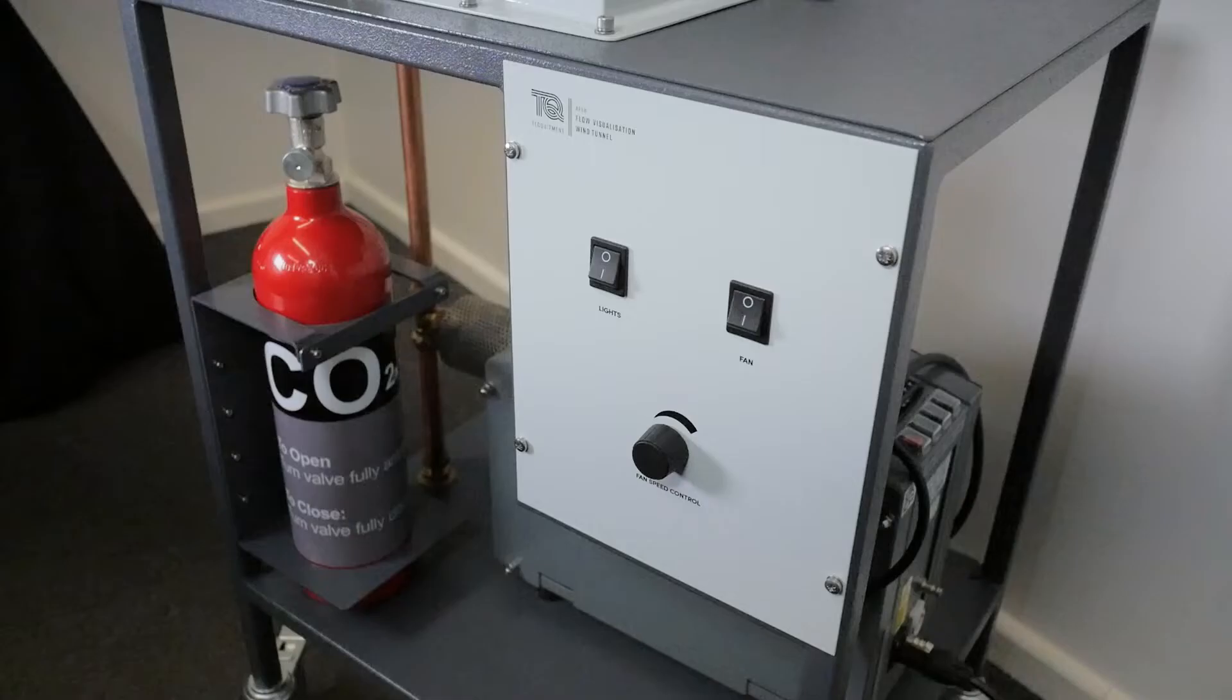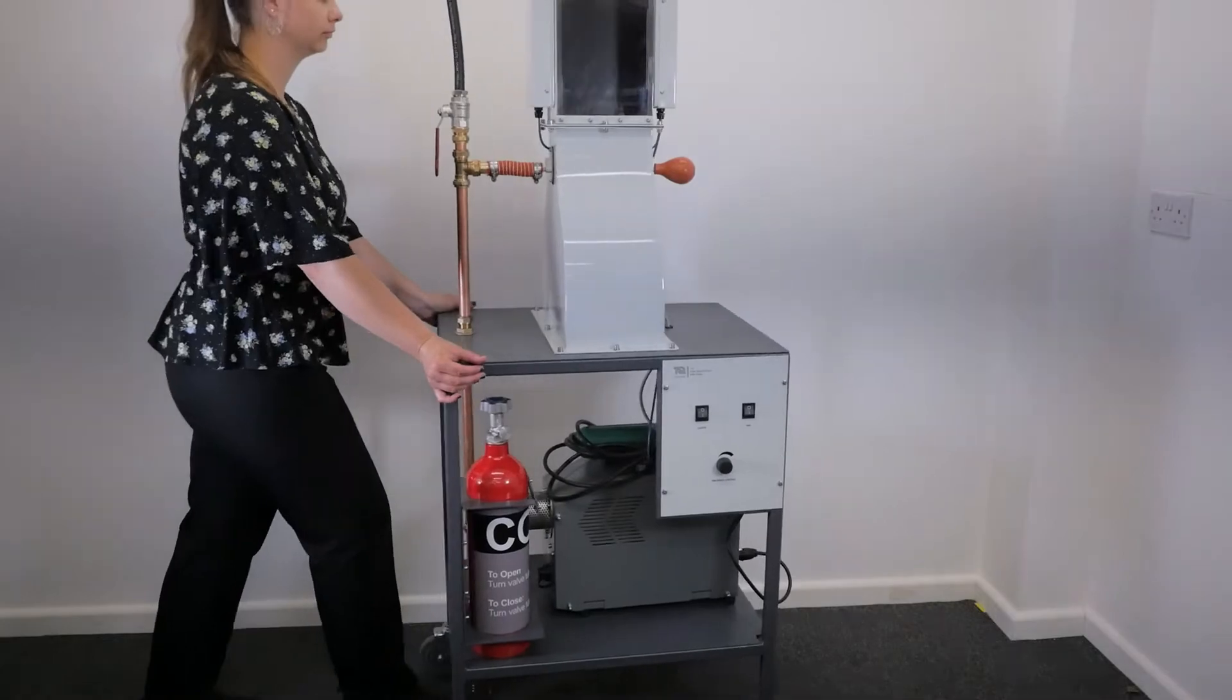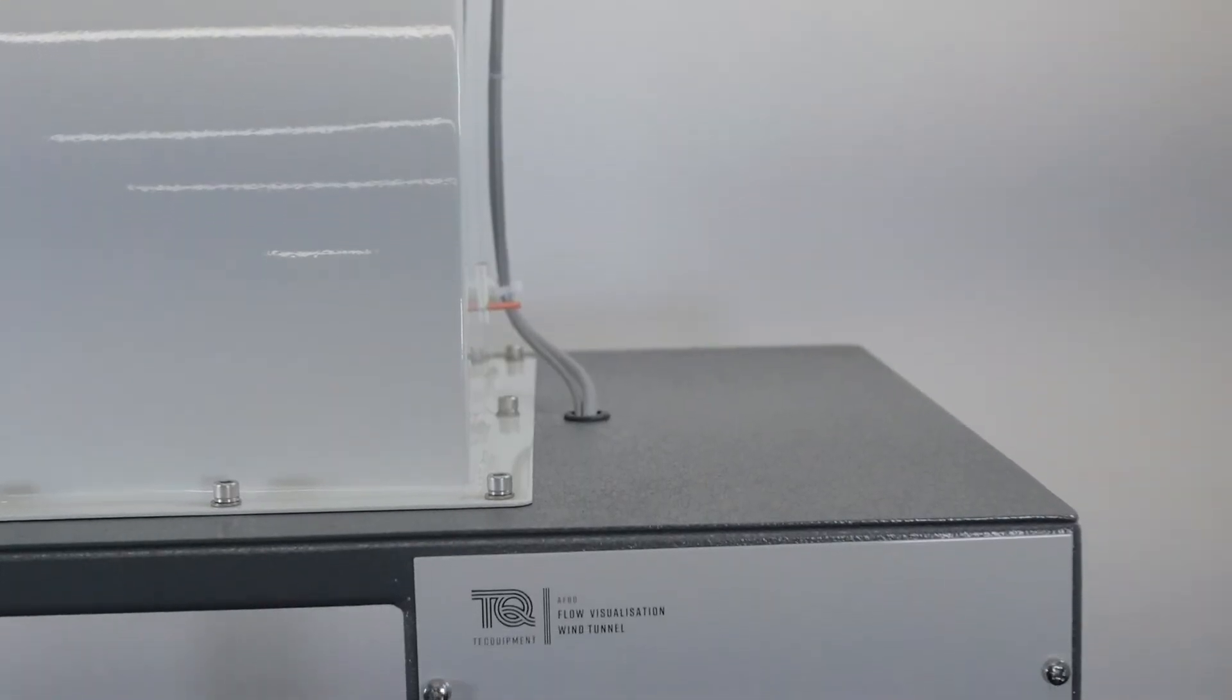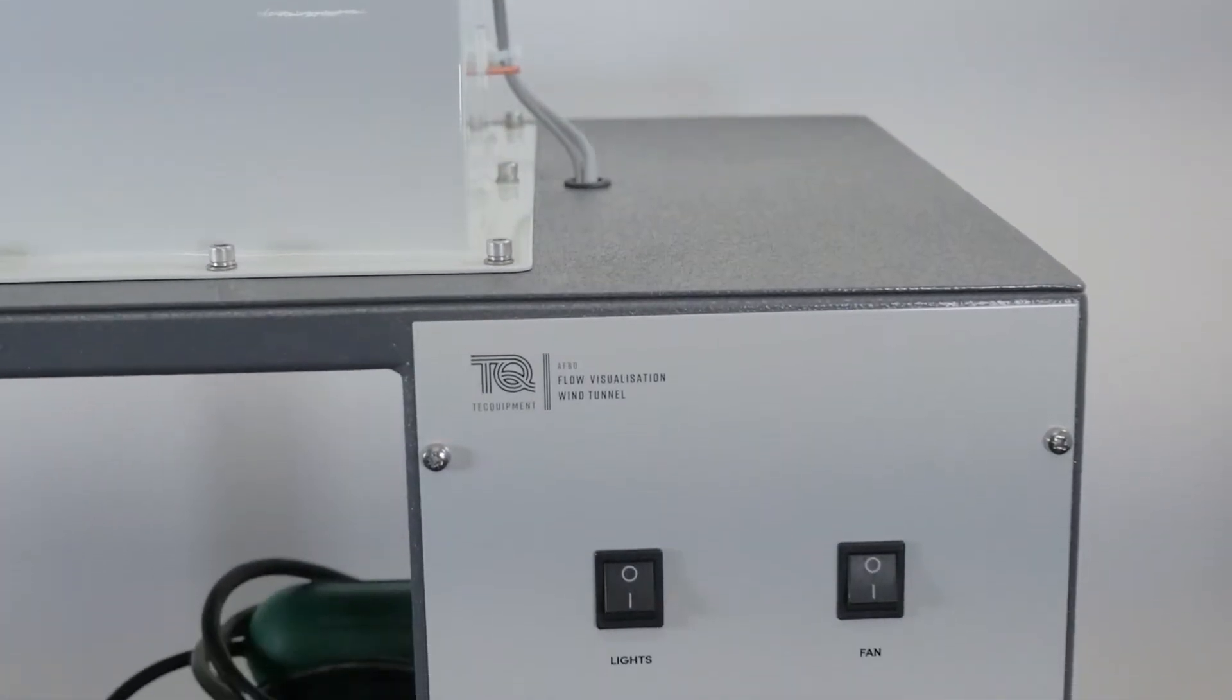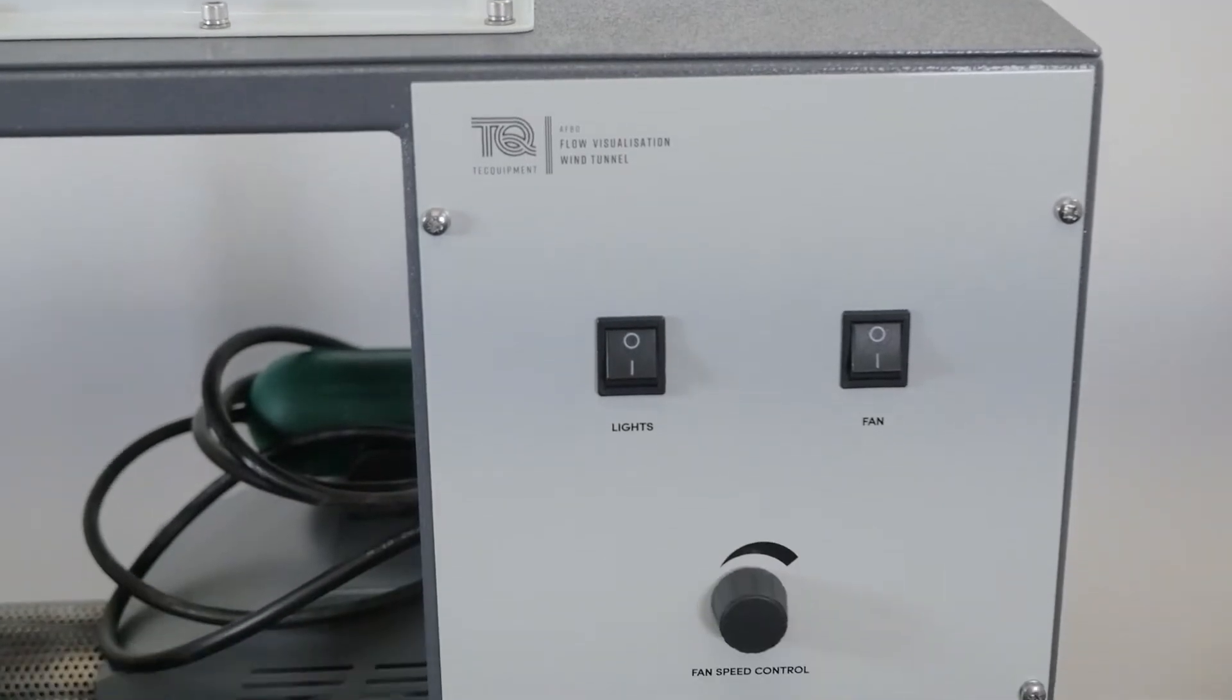Moving on to the wind tunnel and control box, which are placed on a metal frame that's fitted with casters for mobility. The control box controls the fan and connects to the smoke generator, circuit breaker switch and IEC socket.